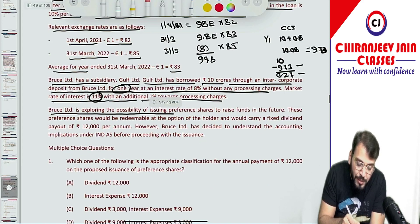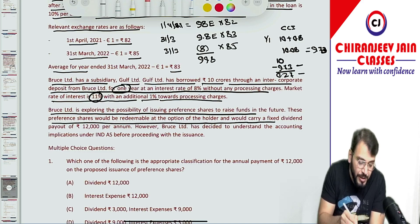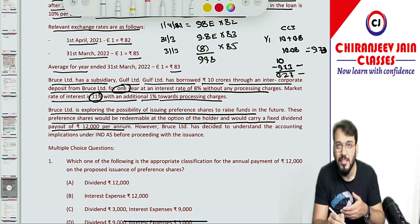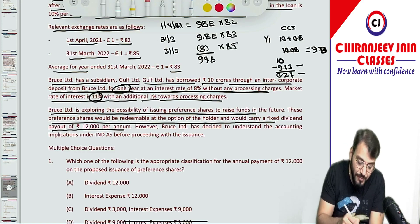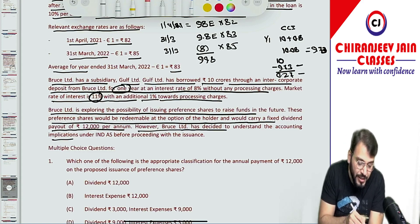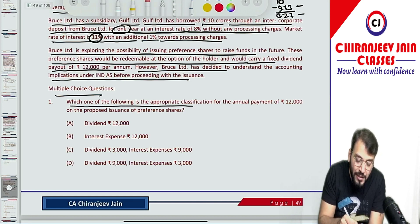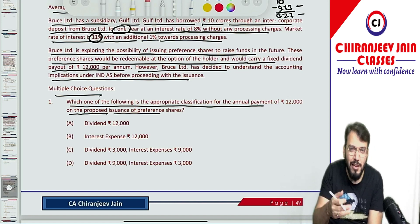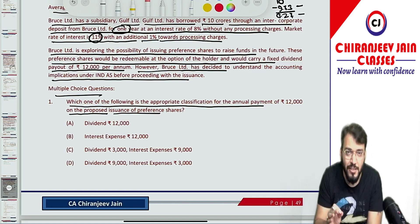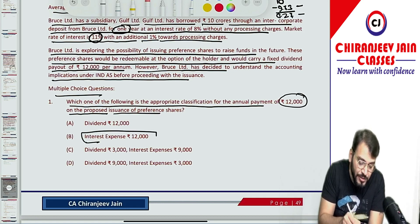Bruce Ltd is exploring the possibility of issuing preference shares to raise funds in the future. These preference shares would be redeemable at the option of the holder and would carry a fixed dividend payout of 12,000. So of course this will be classified as a financial liability because there is a mandatory obligation to pay both principal and interest. The annual payment of 12,000 would be classified as interest expense, since contractual rate and EIR are assumed to be the same.